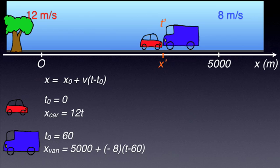In addition, since the van sets off 5000 meters away from the origin of our x-axis, x0 is 5000. The equation of motion of the blue van is, then, x equals 5000 minus 8 multiplied by t minus 60.